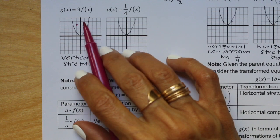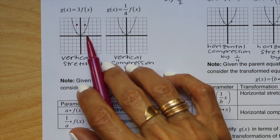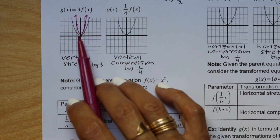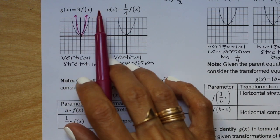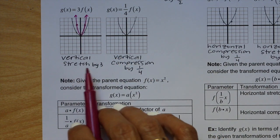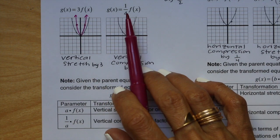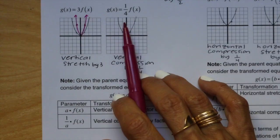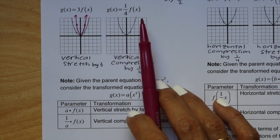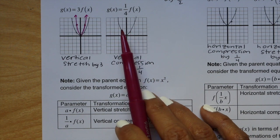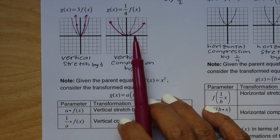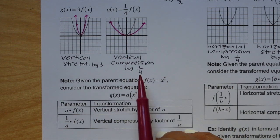Next, we have g of x equals 1 fourth f of x. Because f is being multiplied by 1 fourth in front, we have a vertical compression by 1 fourth. Take your parent graph — instead of going up 1 on both sides, go up 1 fourth. You can see the parent equation has been vertically compressed by 1 fourth.